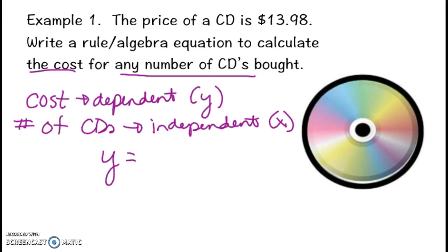The rate here is $13.98 per CD, so it's going to be 13.98 times the number of CDs, which we're calling x. There is no start value in this case, or the start value is zero. If you don't buy any CDs, you don't pay any money. So I don't need to add a zero at the end. My final equation is y = 13.98x.